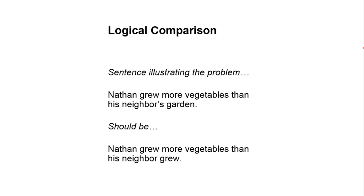The first thing we're going to do is look at a simple sentence that illustrates this specific writing error. Nathan grew more vegetables than his neighbor's garden. The word 'than' is used to compare — for instance, 'she ran faster than he did.' When you compare, you have to compare similar things, apples to apples. You cannot compare different things, like apples to oranges.